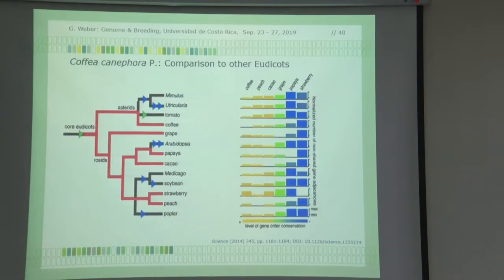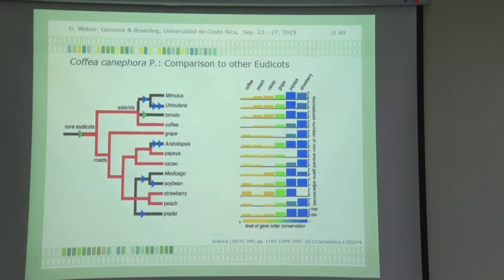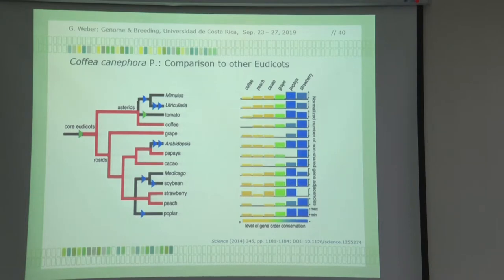Coffea canephora is quite big and Arabica is even bigger — twice as big. This is from a paper where they looked at genes involved in interesting secondary metabolites like caffeine and other substances in different species, compared in a phylogenetic tree. Coffee, tomato, and Utricularia — a water plant — are somehow related as far as secondary metabolites sequentially. Then there's Arabidopsis, papaya, and cacao, somehow related with reference to their secondary metabolite sequences.